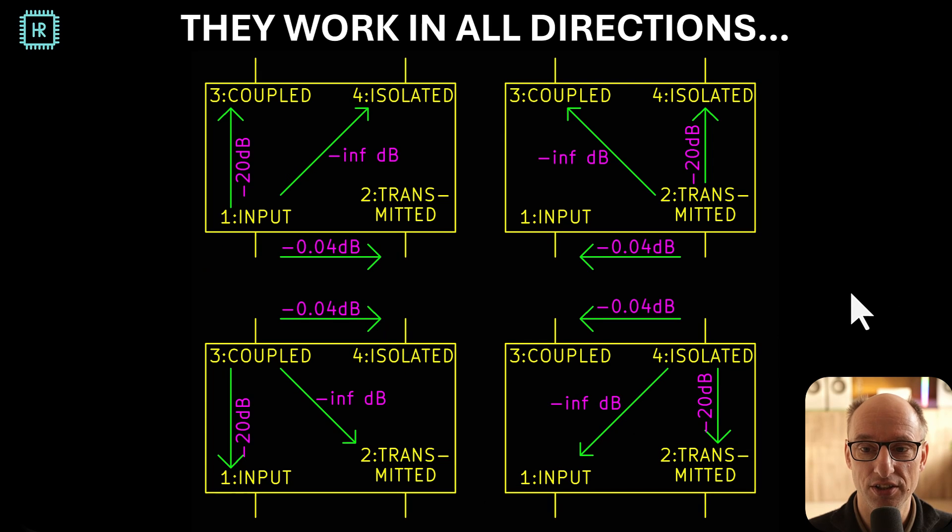Now you can use these things in all directions. On the left top we see the normal situation where you go in here, go out here and have a coupled and isolated port. But you can also use this thing in the other direction. If you put the signal in here you will get everything basically mirrored in the y-axis. And you can also mirror everything in the x-axis as you can see here. You can go into the coupled port and then the transmitted port will be here. This is also why this thing is very useful for doing reflection measurements.